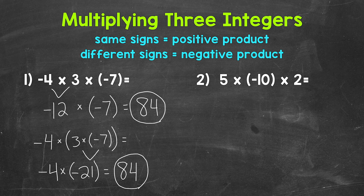Let's move on to number two, where we have five times negative 10 times two. We'll work our way from left to right, starting with five times negative 10. So we have a positive times a negative — different signs — we are going to get a negative. Let's think of this as five times 10, which is 50, and again, it's going to be negative.